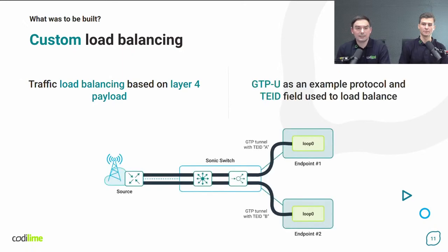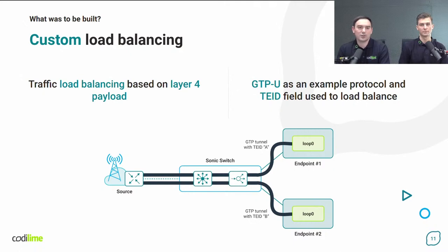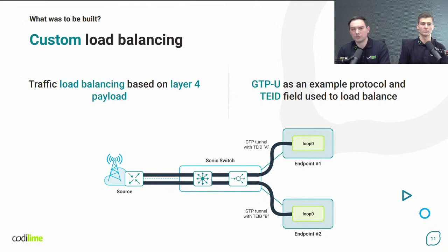We decided to use the GTP protocol as an example, with load balancing based on the TEID field from a GTP header. GTP protocol is one of the fundamental protocols from mobile networks and as such is commonly used in the telecommunication area. In our particular use case, the TEID field from a GTP header is used as the base for load balancing. But this could be easily generalized — with different configuration, we could support a different protocol or use a different part of the packet to make the load balancing decision.